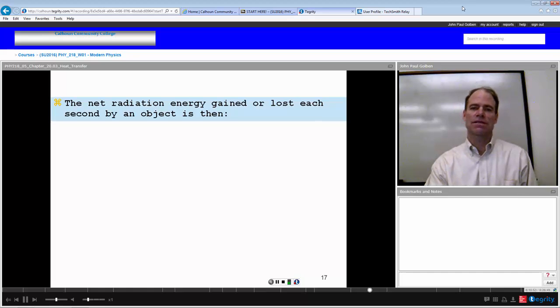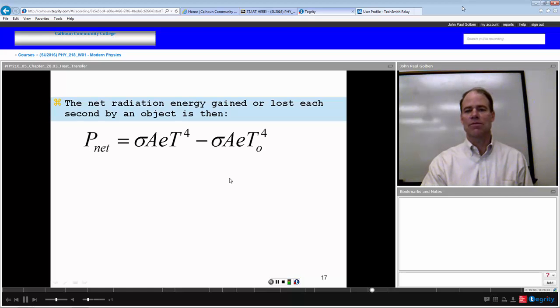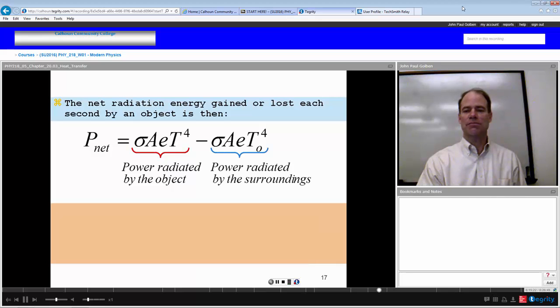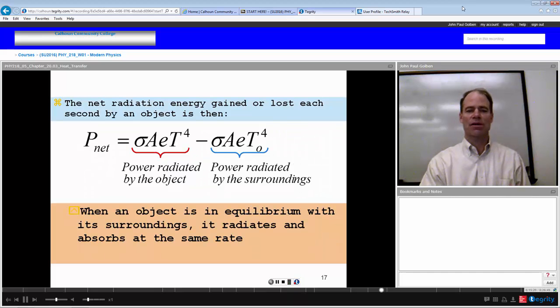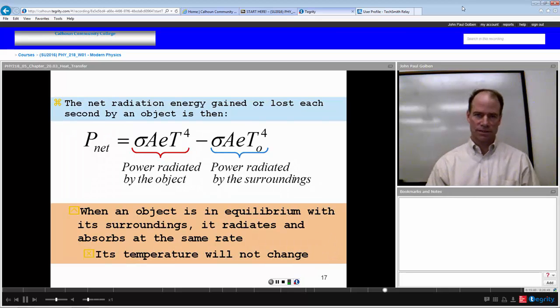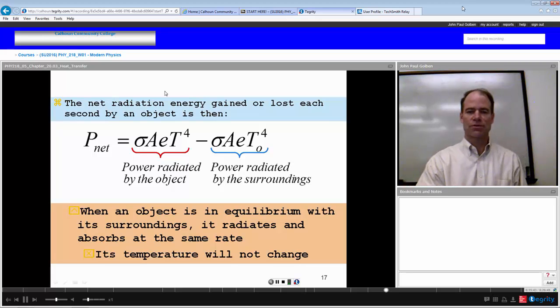The net radiation would be the energy gained or lost each second by an object, which would be how much it emits minus how much it absorbs. So it would be by Stefan's law: sigma A emissivity temperature to the fourth of the object minus whatever it's absorbing, which would be sigma A emissivity temperature of the surroundings to the fourth power. So power radiated by the object minus the power radiated by the surroundings into the object. That would be your net power exchange. When an object is in equilibrium with its surroundings it radiates and absorbs at the same rate and at the same temperature, so its temperature will not change, no net exchange.